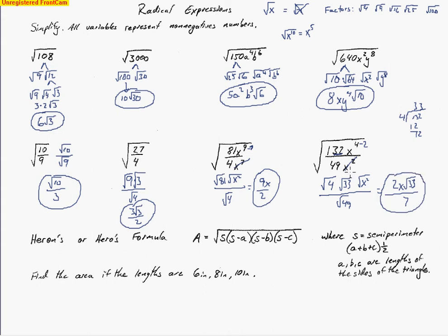The next thing you're going to see is a problem on Heron's formula, or Hero's formula. It's another way to come up with the area of a triangle. It seems more complicated than the formula you're used to seeing — area equals one half the base times the height. That formula only works when we have right angles and know the perpendicular height from the opposite vertex to a base. If we don't have that, this is another way we can come up with the answer.